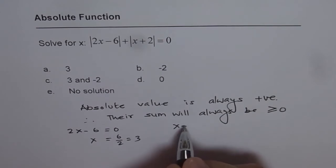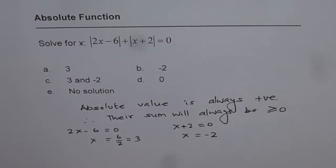And how about x plus 2 equals to 0? x plus 2 is 0 for x equals to minus 2.